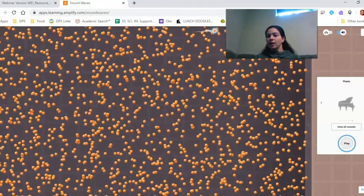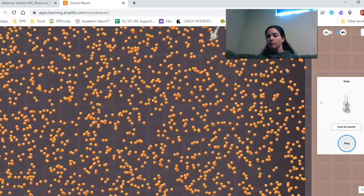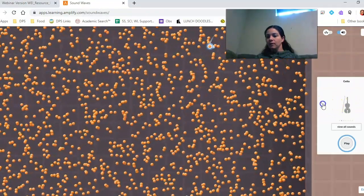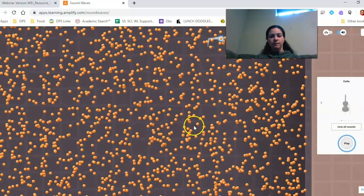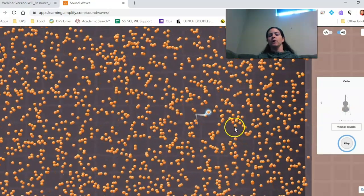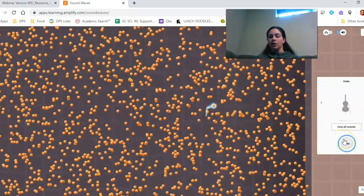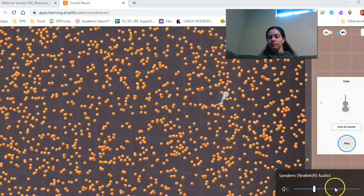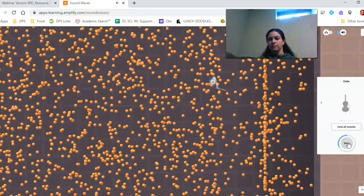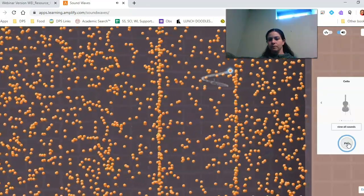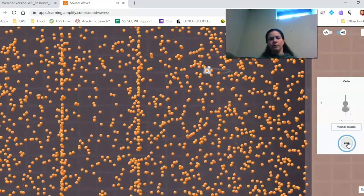So let's go ahead and change to—I don't know if we've done a cello yet. I'm going to actually pick a different particle, one kind of in the middle, and let's go with the cello. Oh.